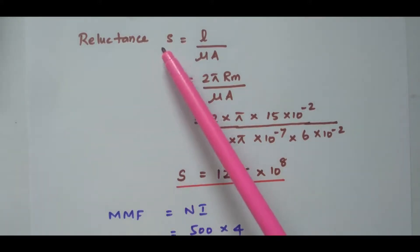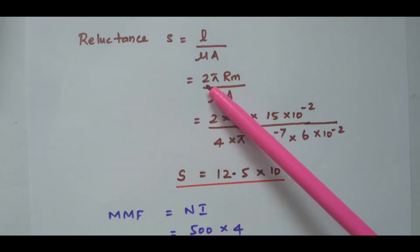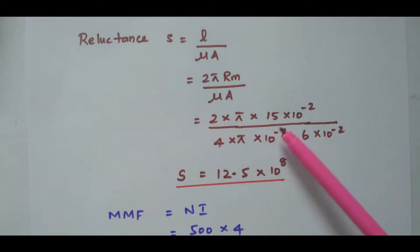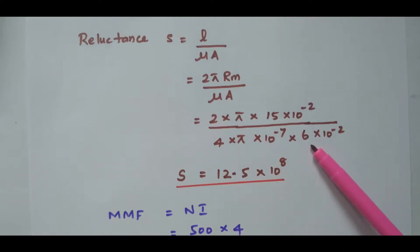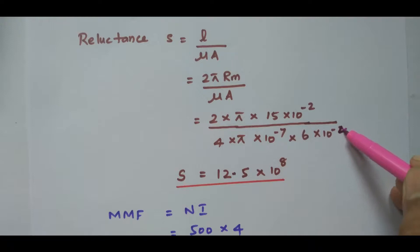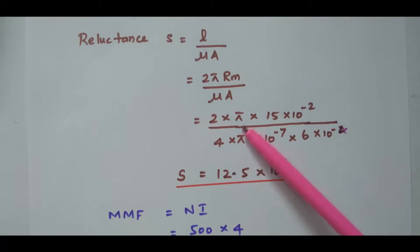First we calculate the reluctance. Reluctance S equals L divided by μA. The length L is nothing but the circumference 2πRm. So S equals 2π times 15×10⁻² divided by 4π×10⁻⁷ times 6×10⁻⁴. After simplifying, the reluctance S equals 12.5×10⁸. The unit is similar to ohms.